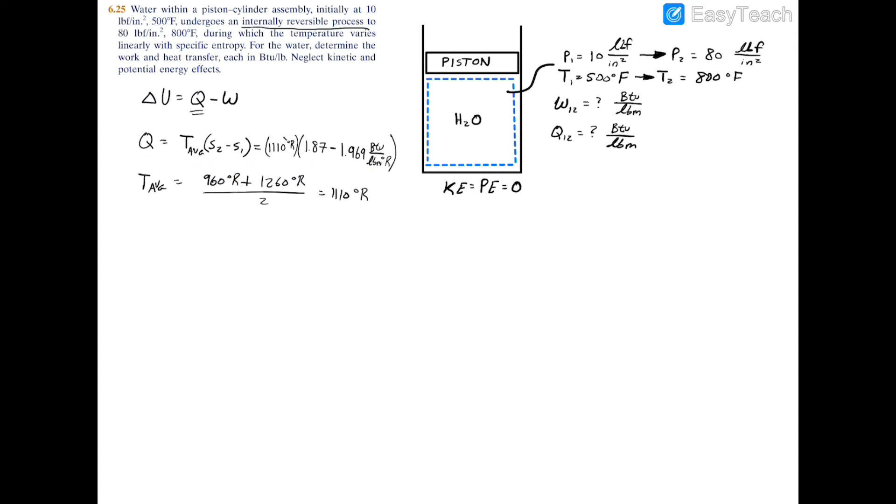If you just carry out this expression, your degrees Rankine will cancel out and you'll be left with your heat transfer equals negative 109.89 BTU per pound mass. That's your first answer.